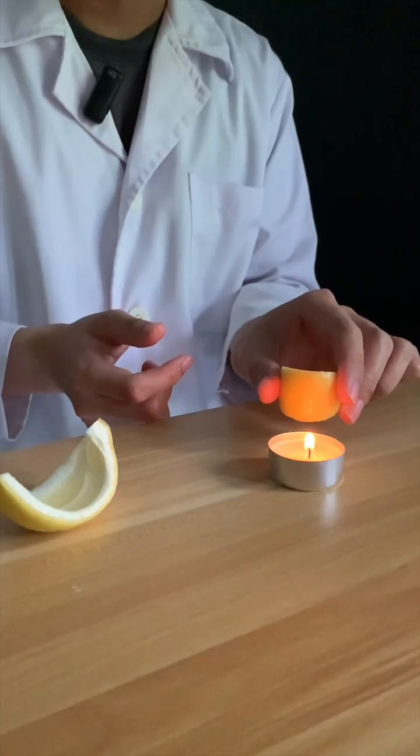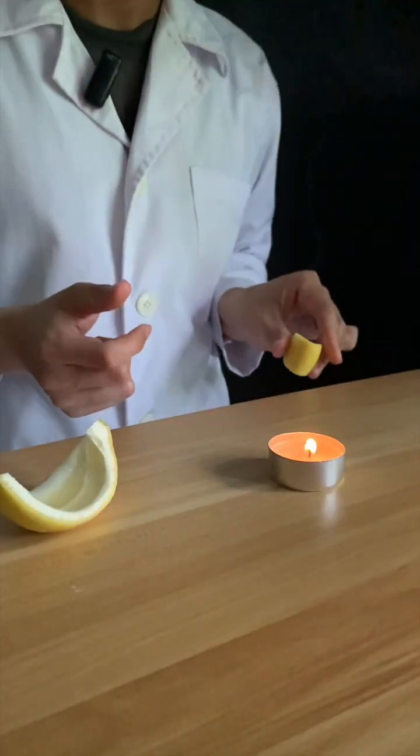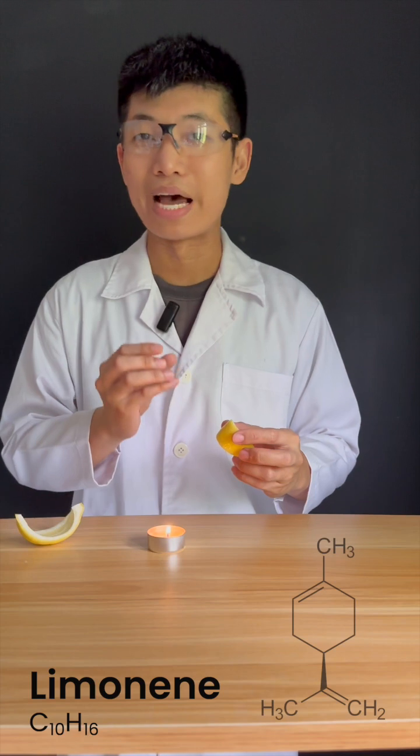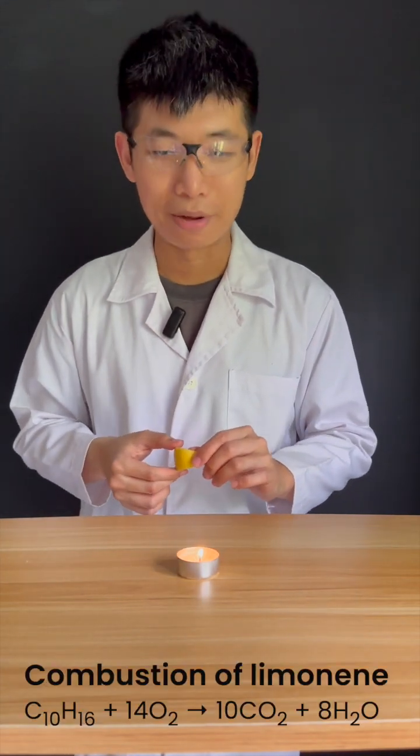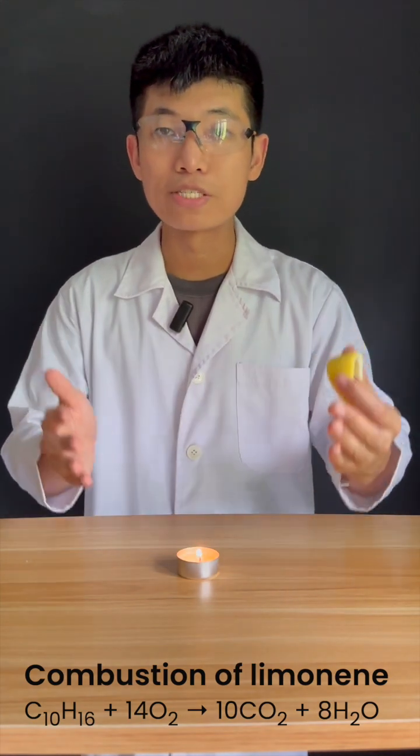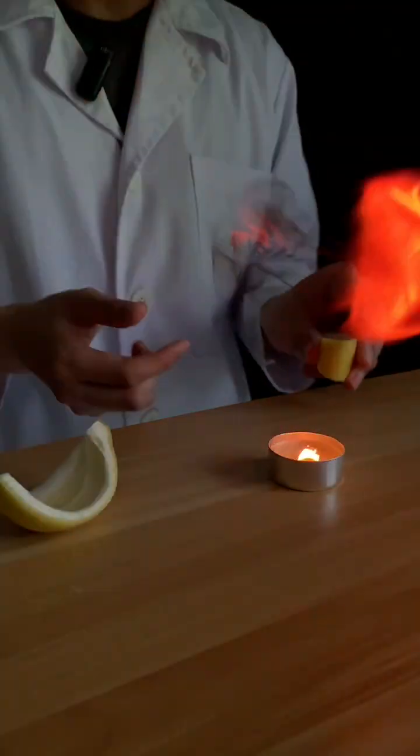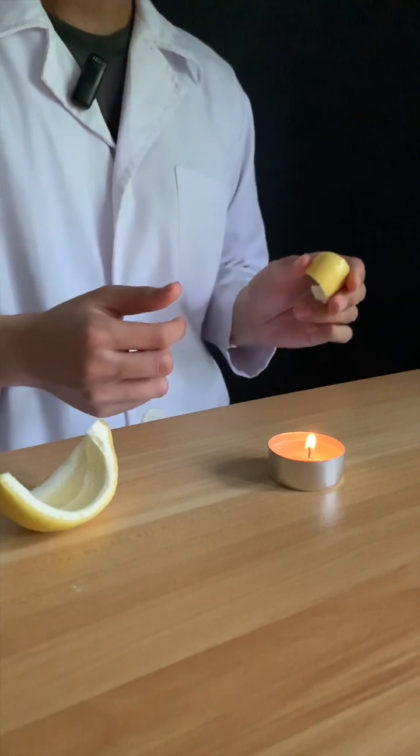As you squeeze your lemon peel, it's going to release this compound known as limonene. Limonene is a hydrocarbon and this demonstration illustrates the flammable properties of hydrocarbons. You will observe a lot of black soot or smoke that comes along when the limonene undergoes combustion.